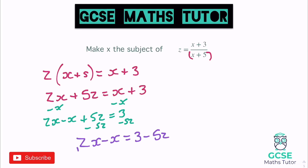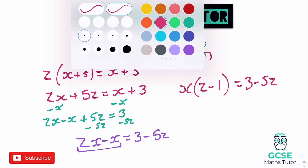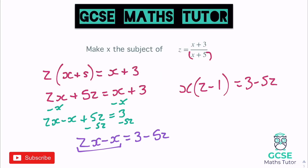Now we can factorise this left-hand side again, same as all the others. We get x brackets z minus 1, because it's just 1x there, equals 3 minus 5z. Then finishing it off by dividing by that bracket, we get x equals 3 minus 5z all over z minus 1. And there is the end of that question.